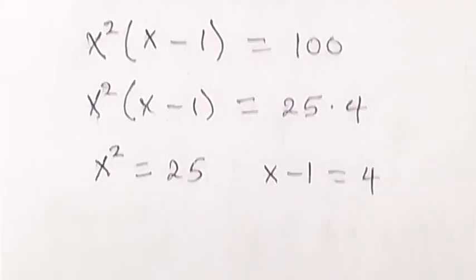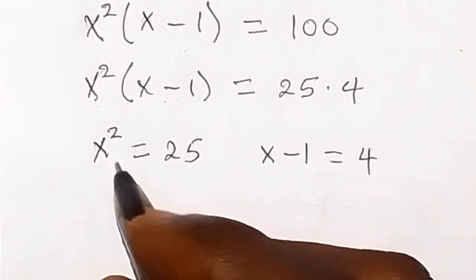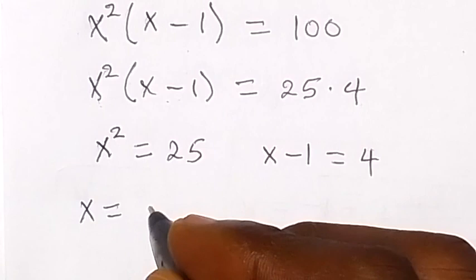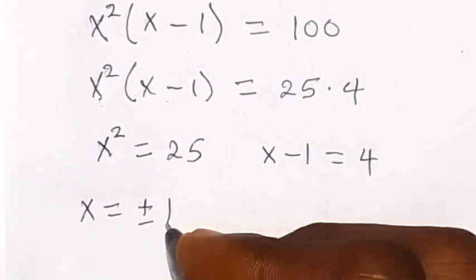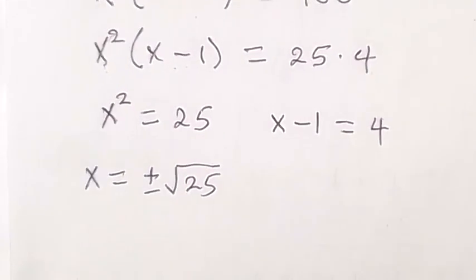So from there when we solve further, on this side when we take the square root on both sides, x here will now be plus or minus square root of 25.